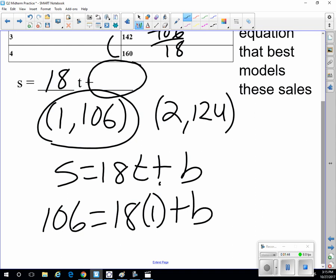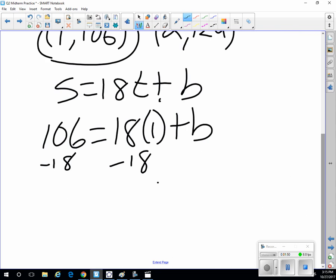So 18 times 1 is 18, so if I just subtract my 18, then that tells me 88 is equal to the B.